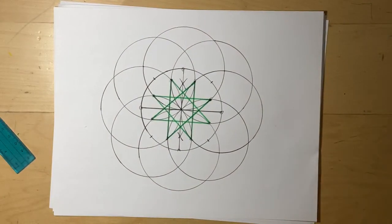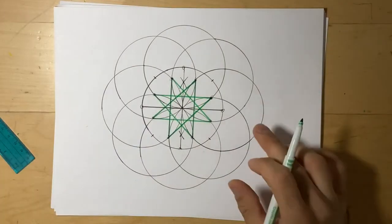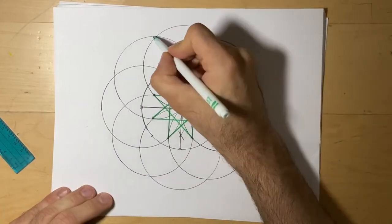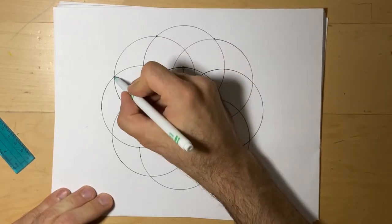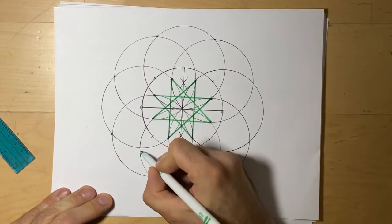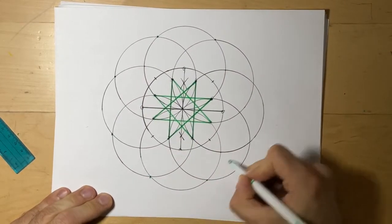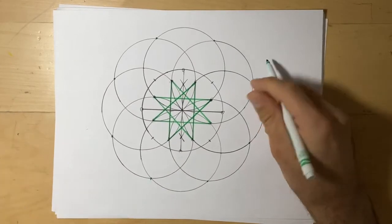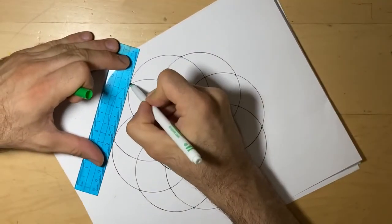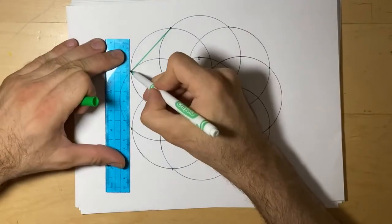Next, we can draw the outline. So we're going to connect here, here, here. It's going to make an octagon because there are eight points. So I'll take my ruler and begin to connect the dots.